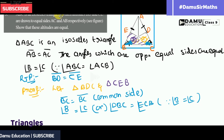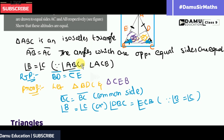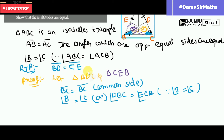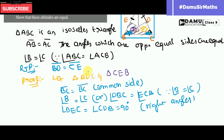Then another condition: angle BEC equals angle CDB, and both equal 90 degrees, since BD and CE are altitudes. So these are the right angles.